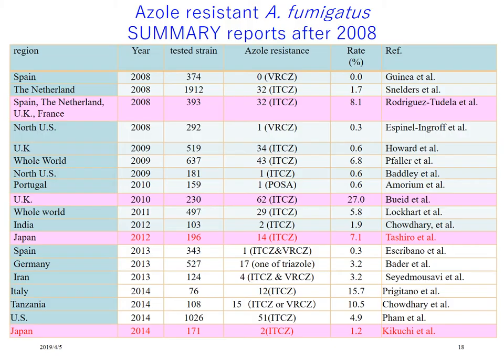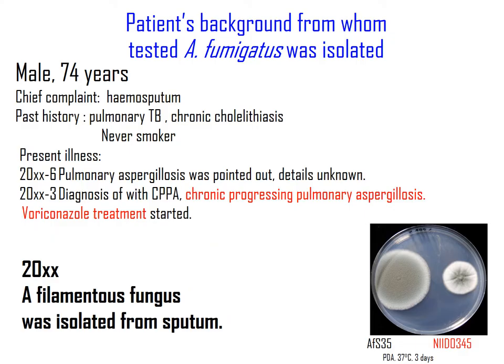Many are concerned about antifungal resistance of aspergillus. Patients with azole-resistant aspergillus infection are reported to show poor prognosis. We studied confirming responsible mutations to azole resistance observed in clinical isolates. The clinical isolate NIID 345 was obtained from the sputum sample of a 74-year-old patient with CPA who had received voriconazole treatment for three years.